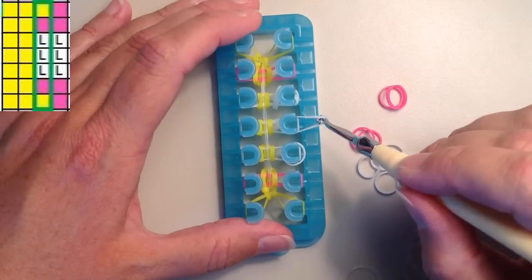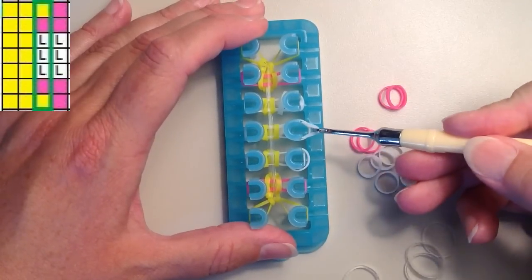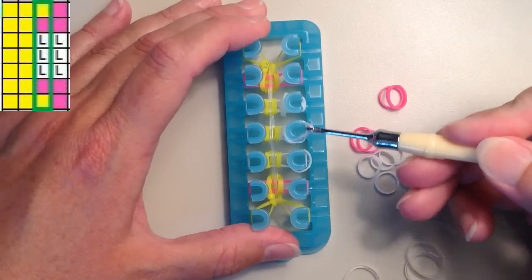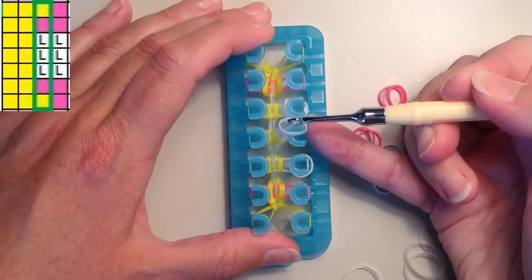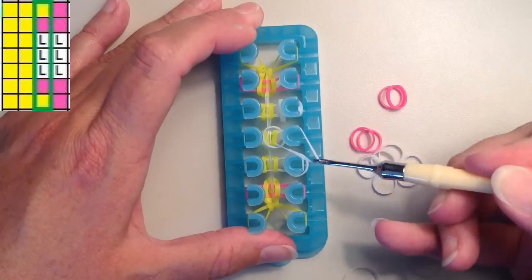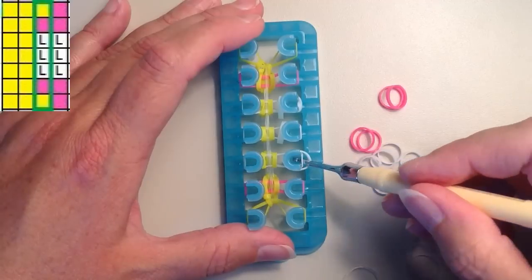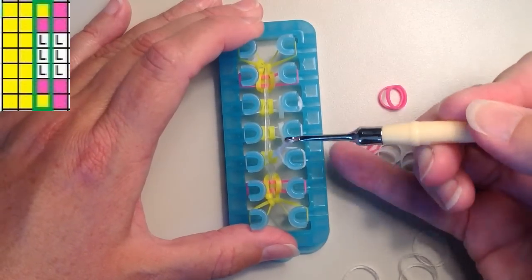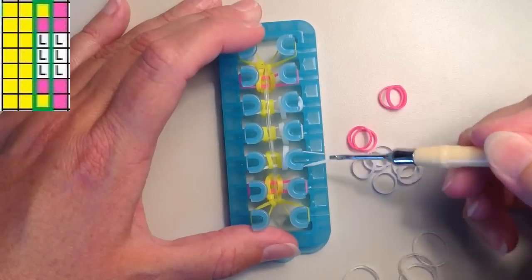So again you're just reaching down inside the loose loop. Grabbing the one that's on your loom here. Pull it up but don't lose it off your hook, that's important. Slip off the loose band and then just put this right back on the pin. So everywhere that I have a little L that's where I'm going to add my extra band.